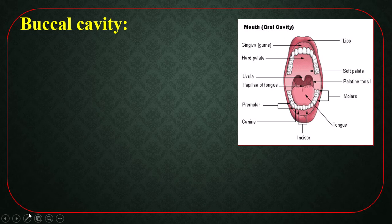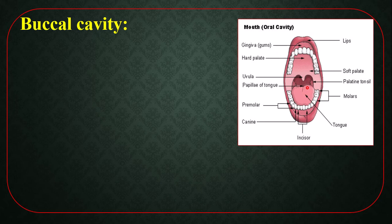Number two — buccal cavity. The second portion of our digestive system is the buccal cavity. The buccal cavity is surrounded by two jaws and teeth. Above this there is a palate, and beneath there is a muscular tongue — upper palate, lower tongue. Moreover, there are three pairs of salivary glands on both sides of the oral cavity.